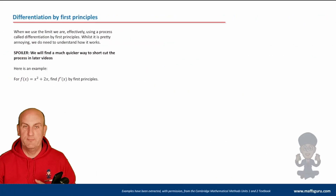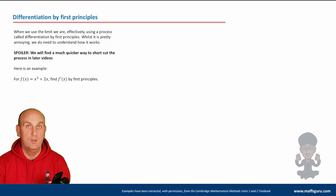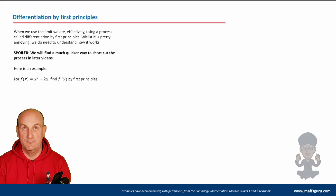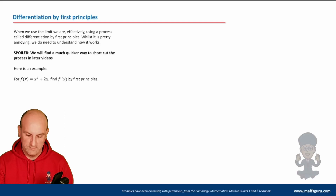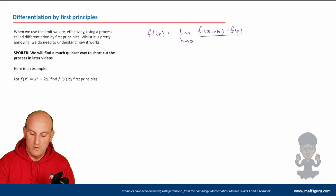If a question says 'show by first principles' or 'differentiate from first principles', you must follow this process — and every single line must be shown. It is tedious, but it is worth several marks. If you miss lines or skip steps, you won't get the marks. So: f′(x) = lim H→0 of [f(x + H) minus f(x)] divided by H.